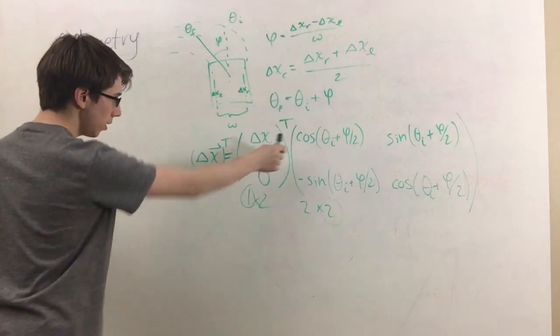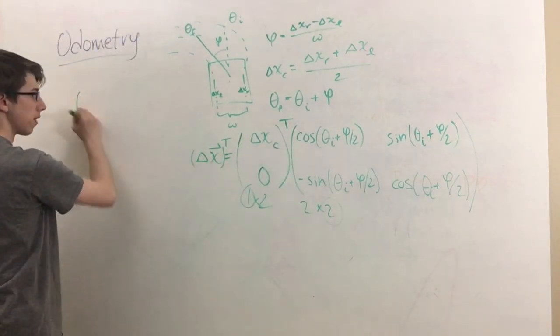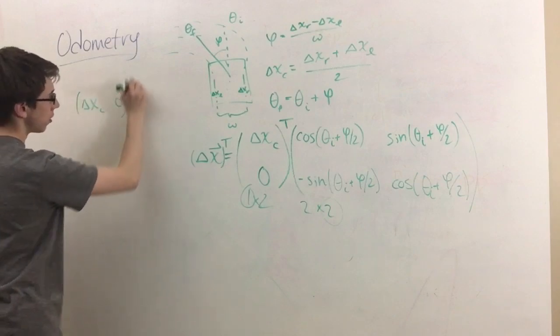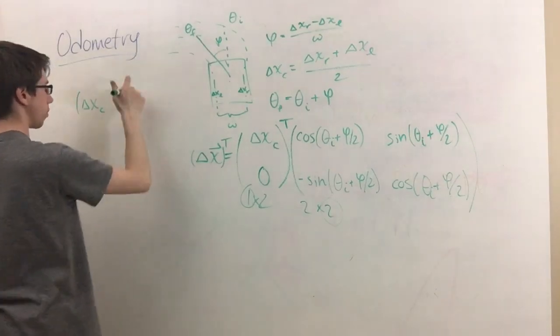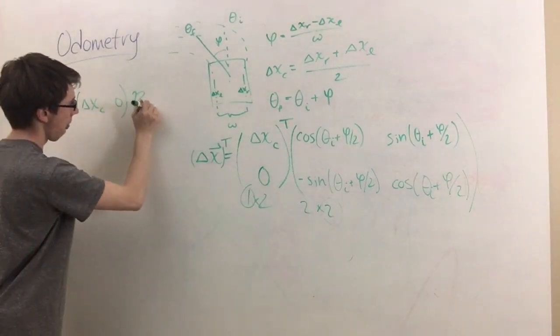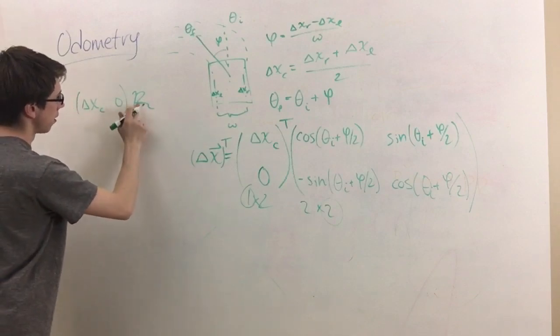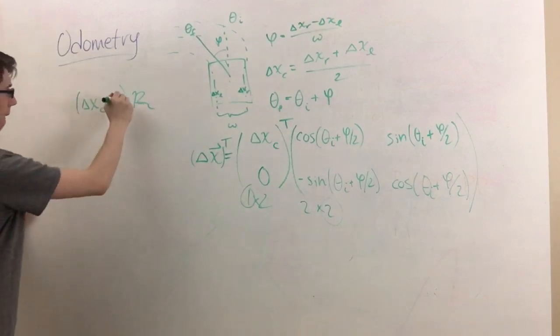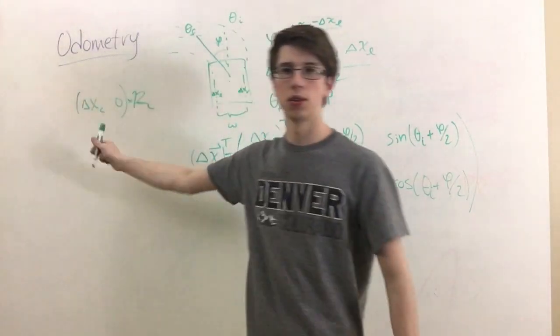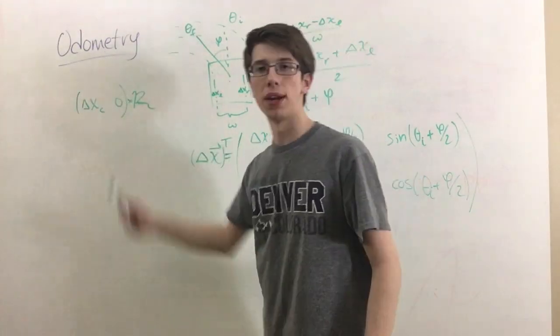So what we'll get here is we get delta x c, 0, times that rotation matrix, which I'll just represent using this script R right here. So how am I going to multiply this out?